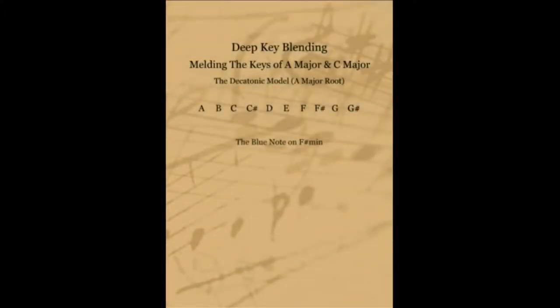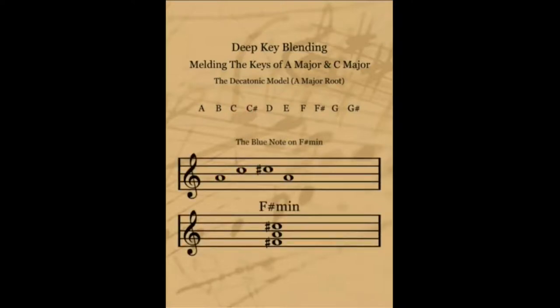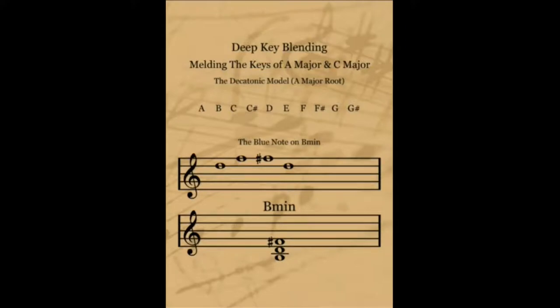Now, moving back over to the key of A major, let's see about grabbing the flat 5 blue notes on the minor chords of that key. First, we'll check out the F sharp minor chord, or the 6 minor chord in the key of A. The blue note resides between A and C sharp as the C note. Next, looking at the 2 minor chord of the key of A, which is B minor, we should find the blue note between the notes D and F sharp, expressed as the F note. And there we have it, again coming straight out of the decatonic model. And for our final minor chord, C sharp minor, we should be able to grab the blue note between the notes E and G sharp as the G note.